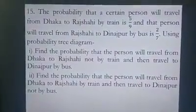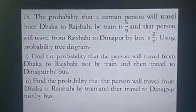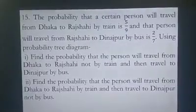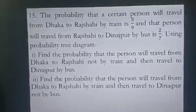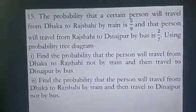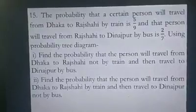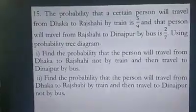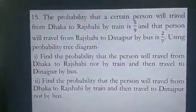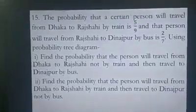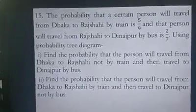We know the total probability is one, so if we subtract five-ninths from one, it gives us four-ninths. That is the probability of traveling not by train from Dhaka to Rajshahi. Similarly, the probability of traveling Rajshahi to Dinajpur by bus is two-sevenths, so the probability of not traveling by bus is one minus two-sevenths, which is five-sevenths. So from only two given values, we have derived four pieces of information.